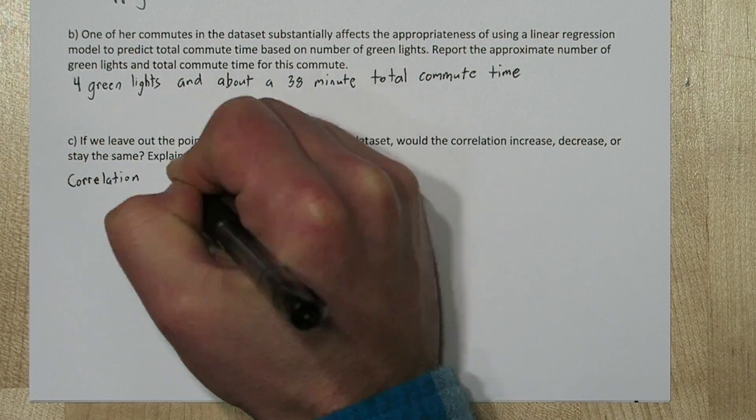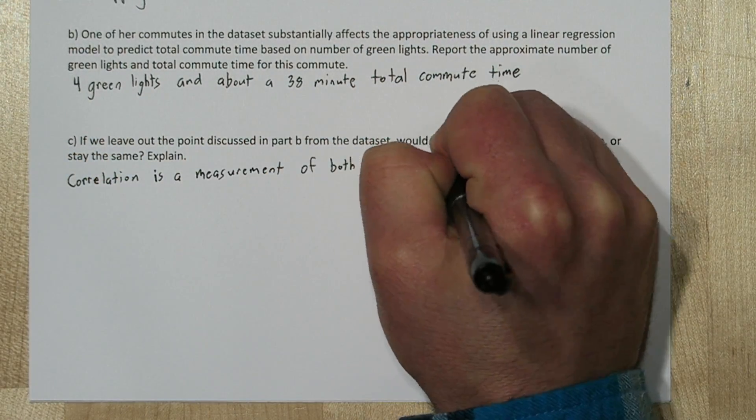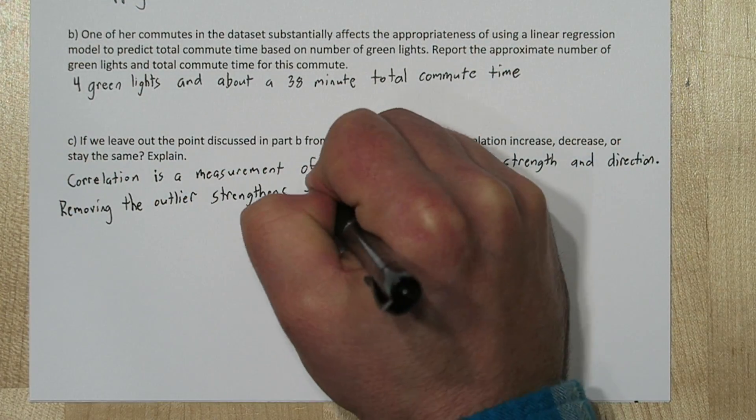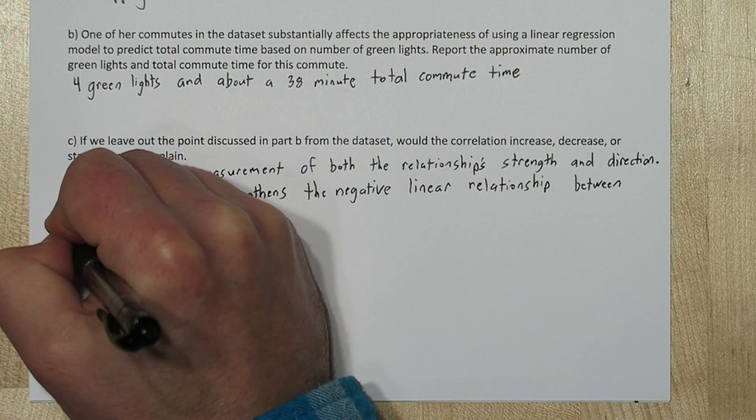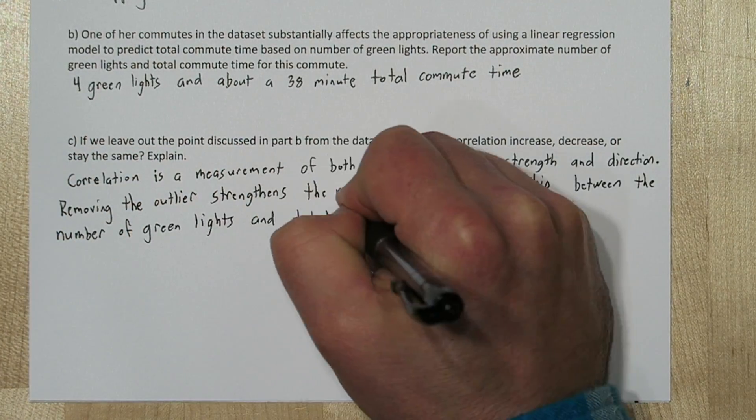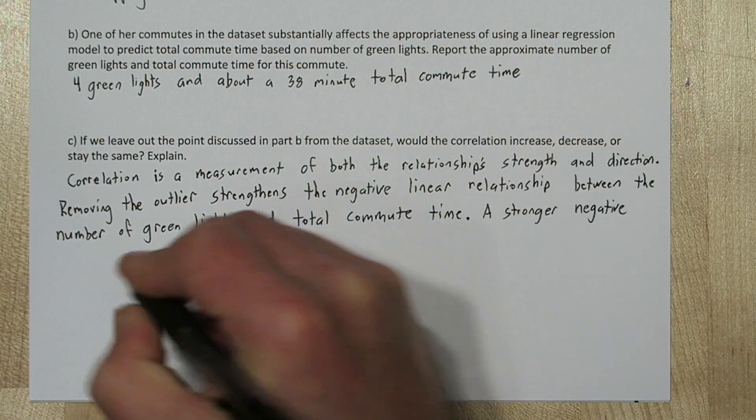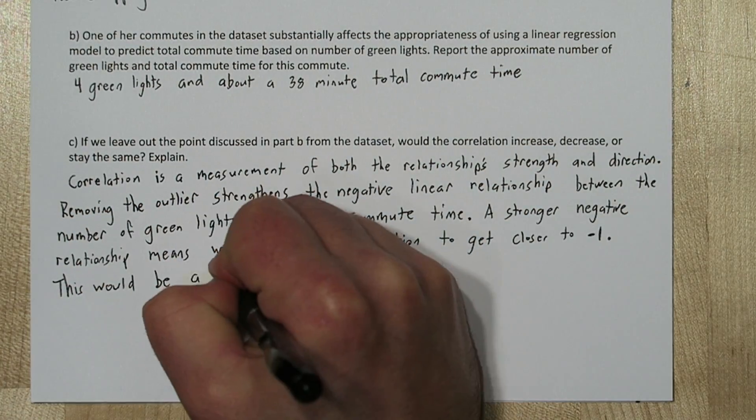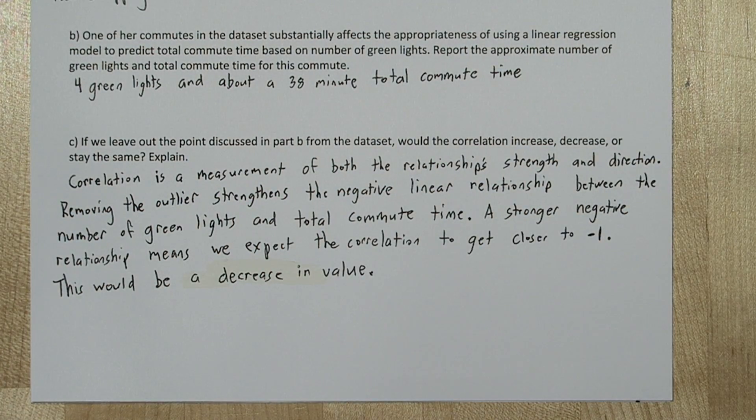Correlation is a measurement of both the relationship's strength and direction. So removing the outlier strengthens the negative relationship between the number of green lights and total commute time. So a stronger negative relationship means we expect the correlation to get closer to negative 1. This would mean a decrease in value.